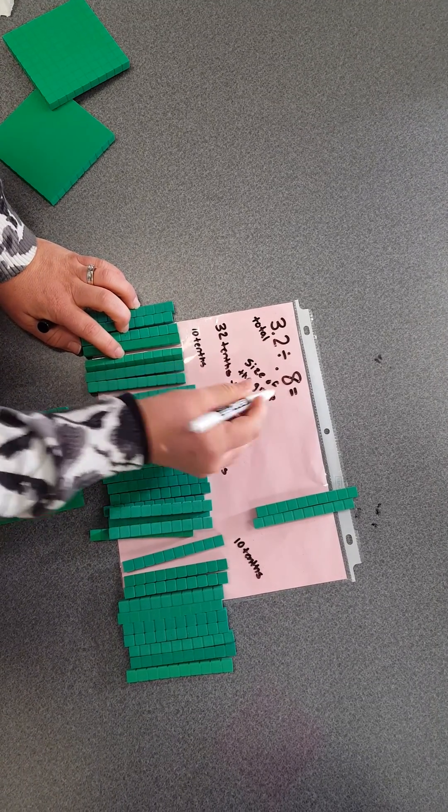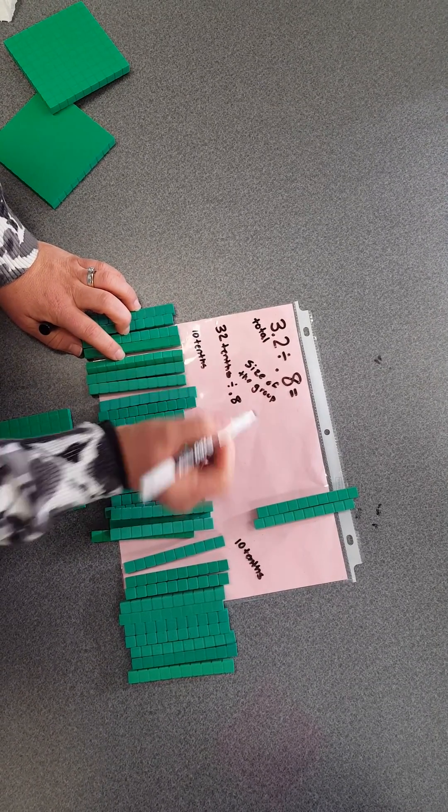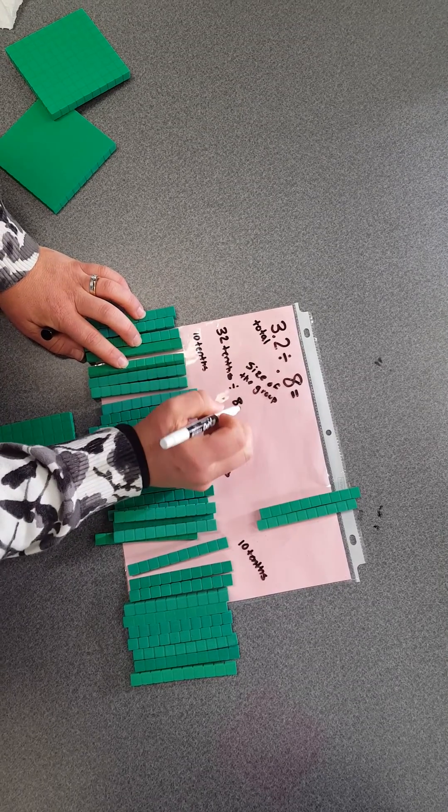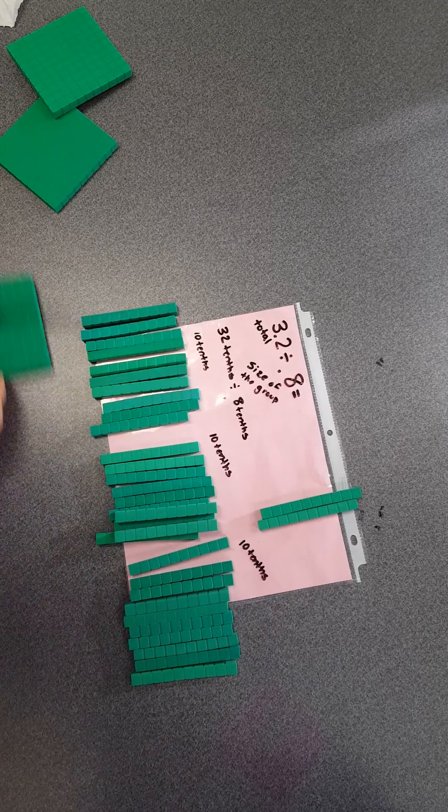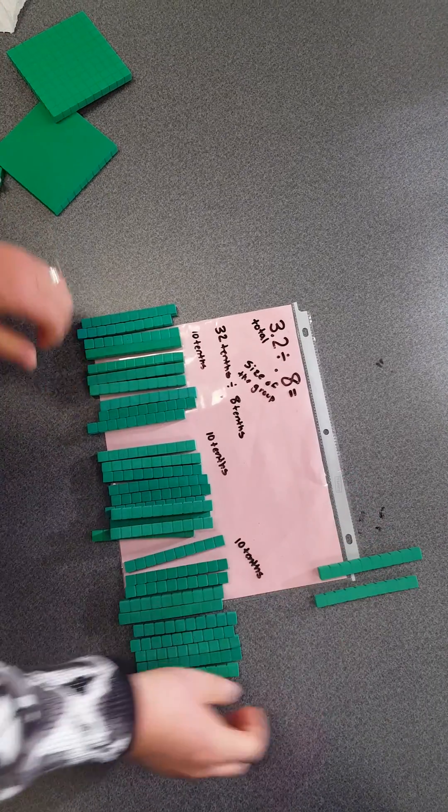I'm going to divide them into groups that are 8 tenths big. I now know how to do that because I have 32 of them, and I know that I can put them into groups that are 8 big.